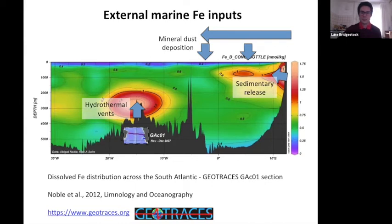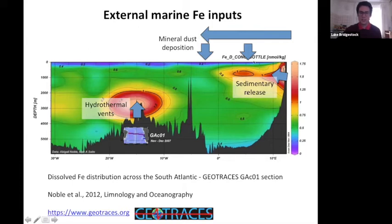Important external sources of iron include deposition of dust blown off dry and arid regions like Namibia to the ocean surface, release of iron from continental margin sediments, and inputs from hydrothermal vents in the deep ocean. Understanding the distribution and magnitude of these external iron sources is critical for understanding patterns of iron limitation and nitrogen fixation.